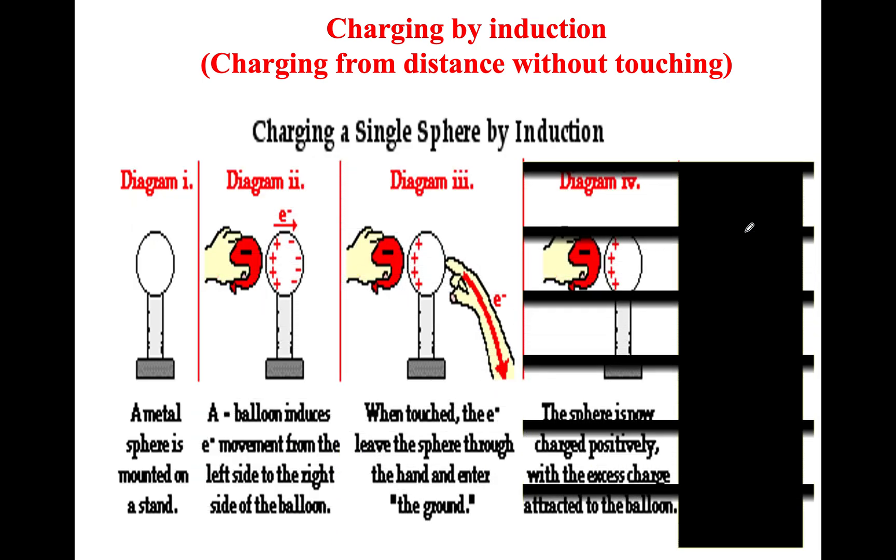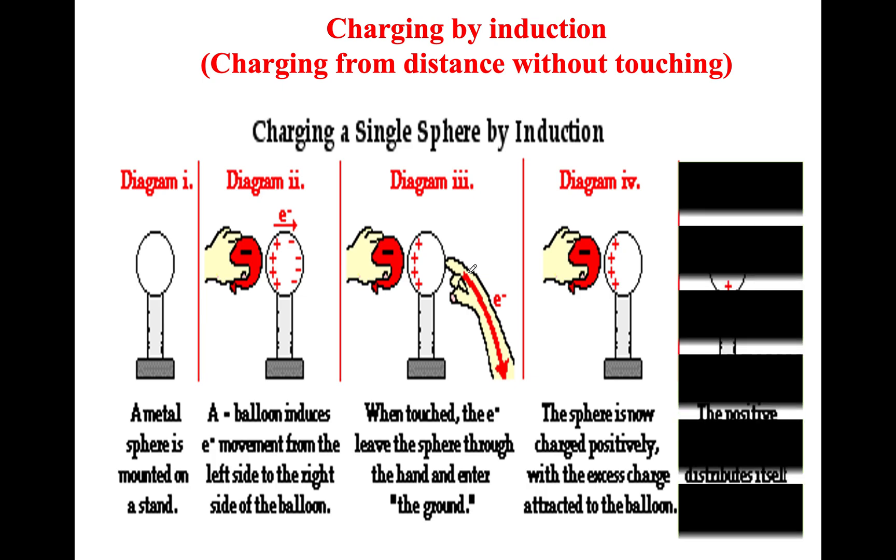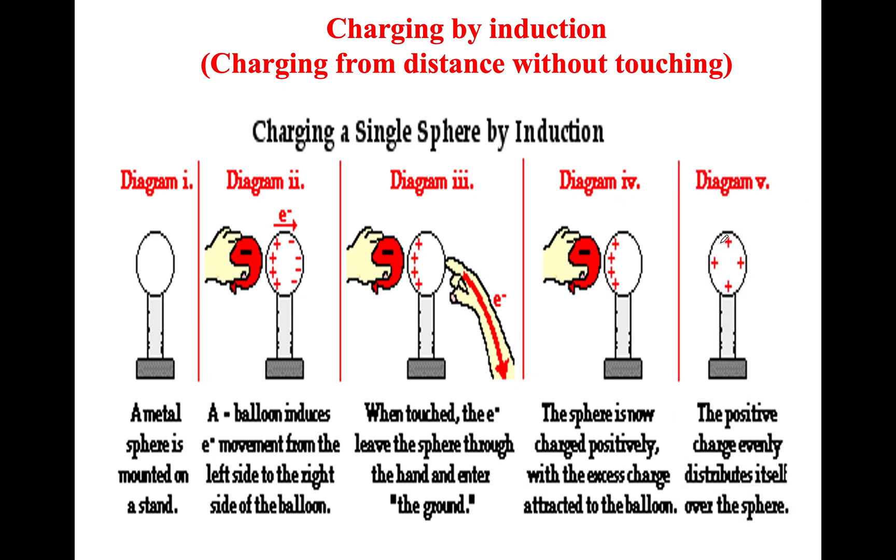And then you do that, and you can also touch it, as I was saying, to the ground. So this person is going to get a nasty electric shock. But you can touch it. The electrons can leave. And once they've left, that means the sphere itself is stuck with that charge.